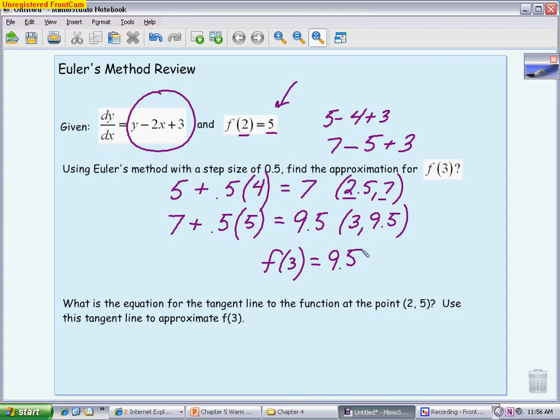The next question is not something we did in class when we talked about Euler's, but something that we would have done last year in Calc 1. It's basically another way to make an approximation. And what we're looking at is we're going to use the tangent line to make an approximation. We called this the local linear approximation. And what this is saying is if we can write the equation for the tangent line to the function at the point 2, 5, then we can use that to come up with our approximation for what's happening at f of 3.